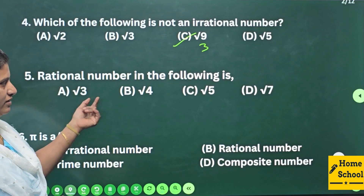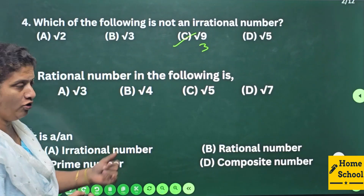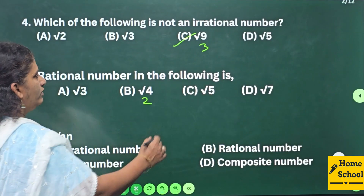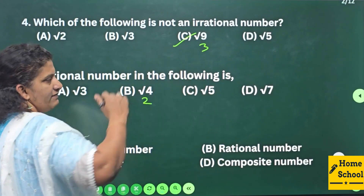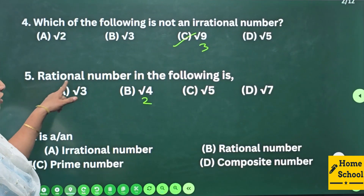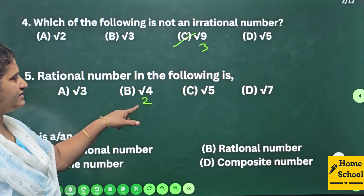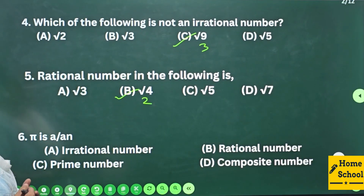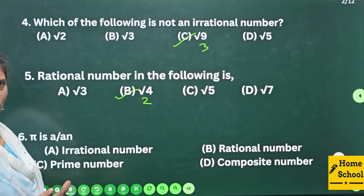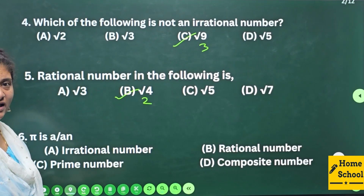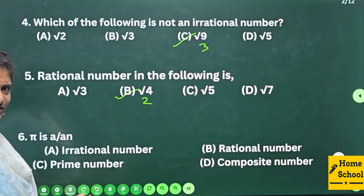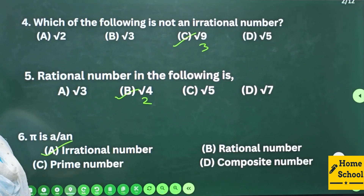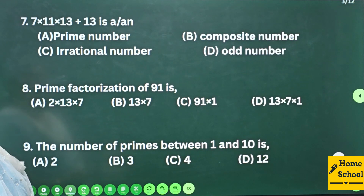Question 5: Which is the rational number in the following? √3 is irrational. √4 — if you remove the square root you get 2. √5 is irrational, √7 is irrational. Among these, the rational number is option B. Question 6: What is π? π is an irrational number.